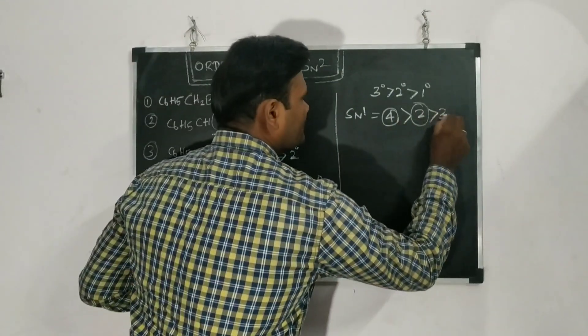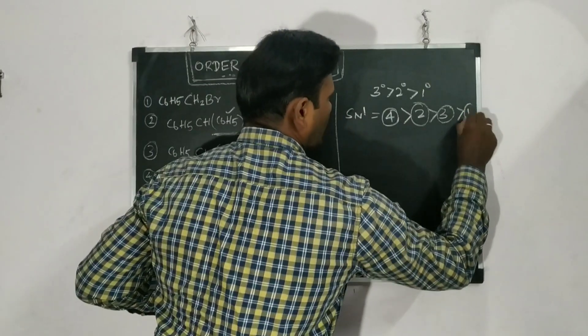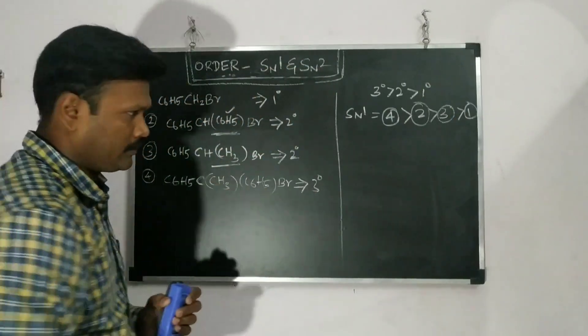And the third one is, this is the third one. This is because that's also 2 degree. And finally we have 1 degree. That is one. So this is the order of reactivity for SN1.